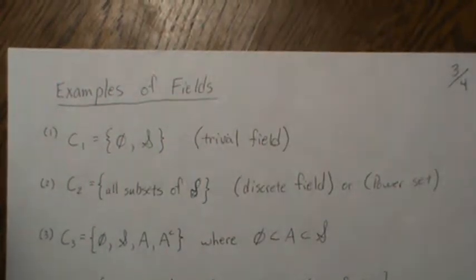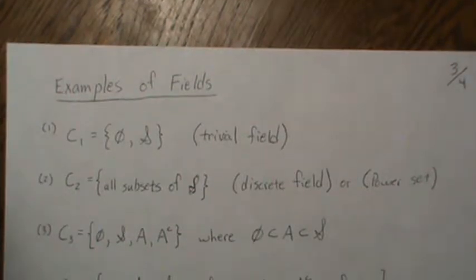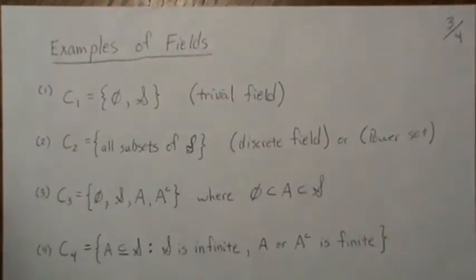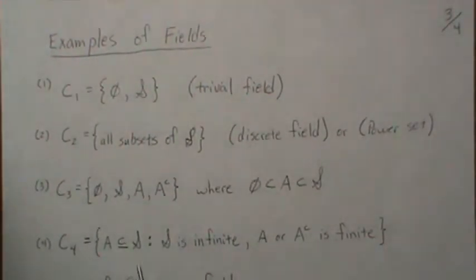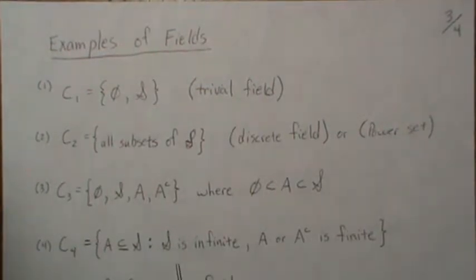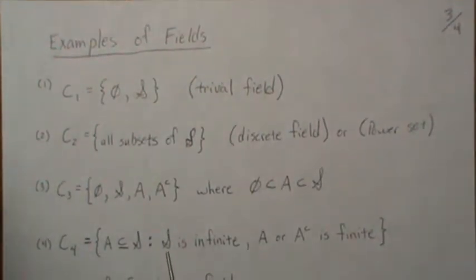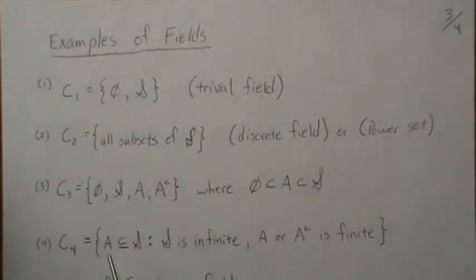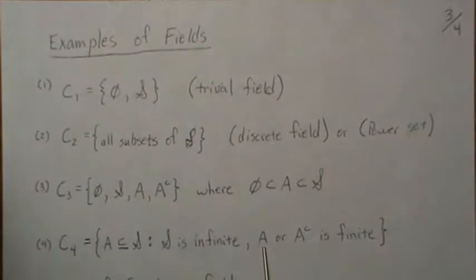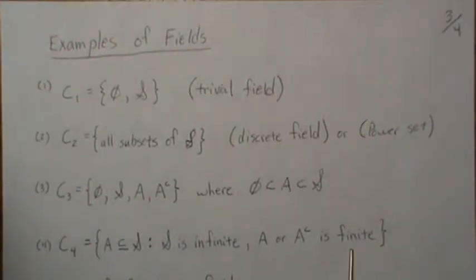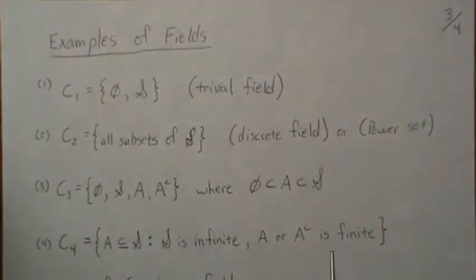The next example is a little more complicated, but it touches on what I want to show in this mini-series. We have class C4. Assume the sample space S is infinite. We want all the sets in S such that A or A complement is finite. So if A is infinite and its complement is also infinite, it's not in this set — at least one of them must be finite, though potentially both could be finite.